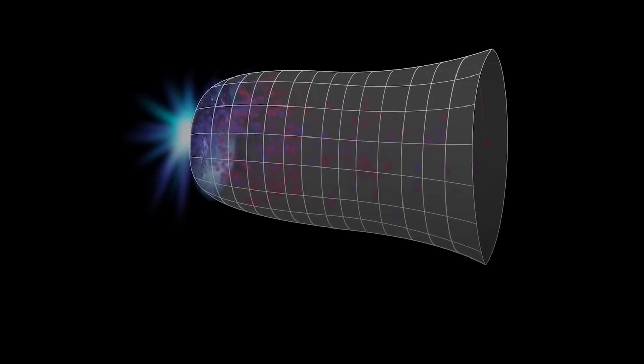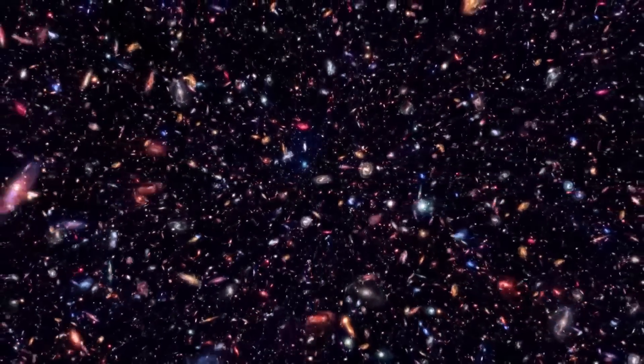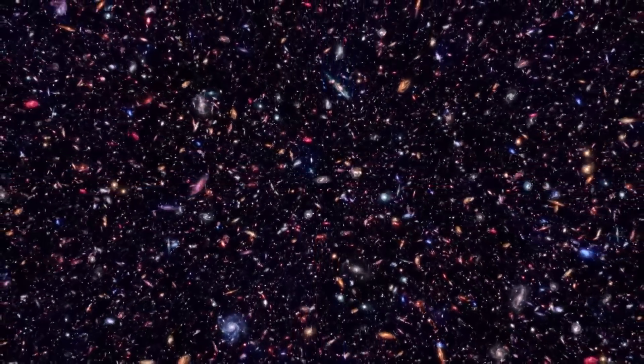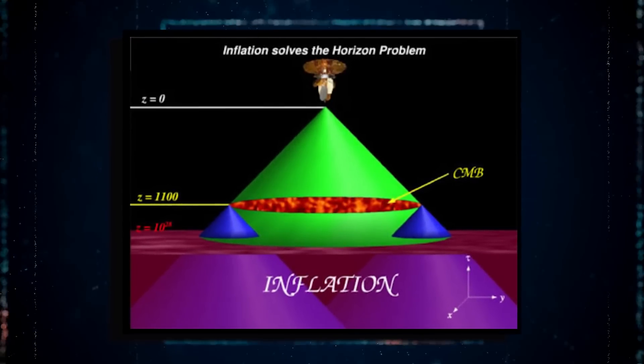To solve this problem, scientists have turned to the concept of inflation, which stretches the universe to a state that appears flat and uniform across all observable locations. If inflation can solve the horizon problem, it can also resolve the monopole problem.